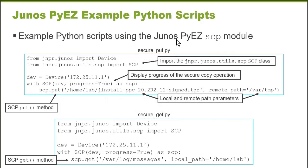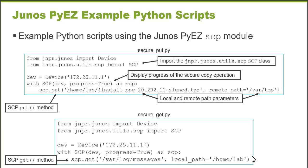In this Learning Byte, I have two Python scripts I'd like to use for examples. The first Python script performs an SCP put operation with the goal of copying a Junos software image file from the HomeLab folder on my administrative workstation to the VarTemp folder on a remote VMX resource. The other Python script performs an SCP get operation with the goal of copying the Junos syslog messages file from a remote host to the HomeLab folder on my administrative workstation.